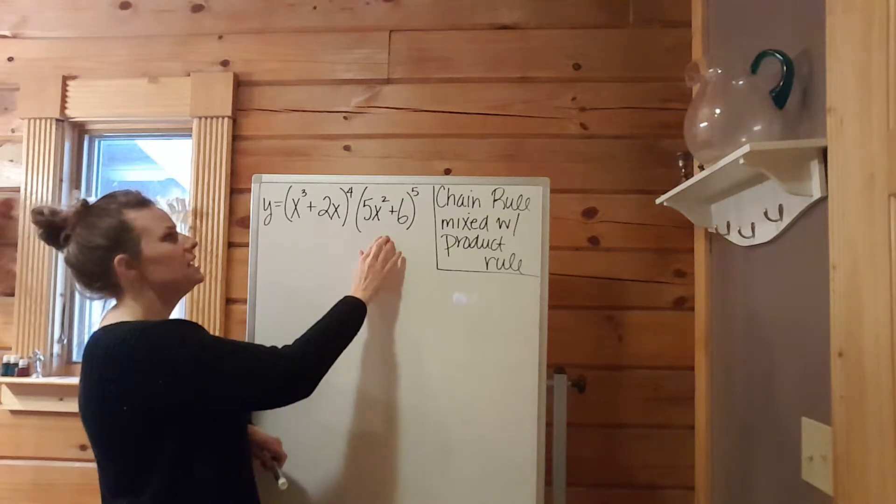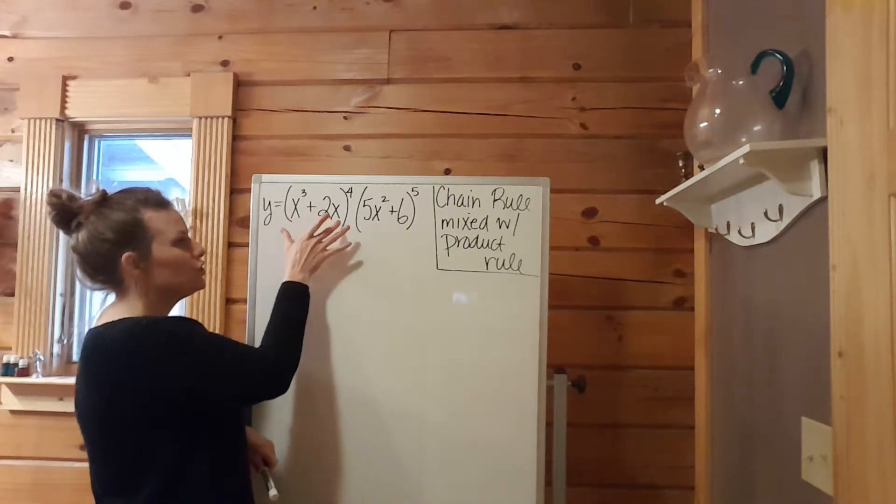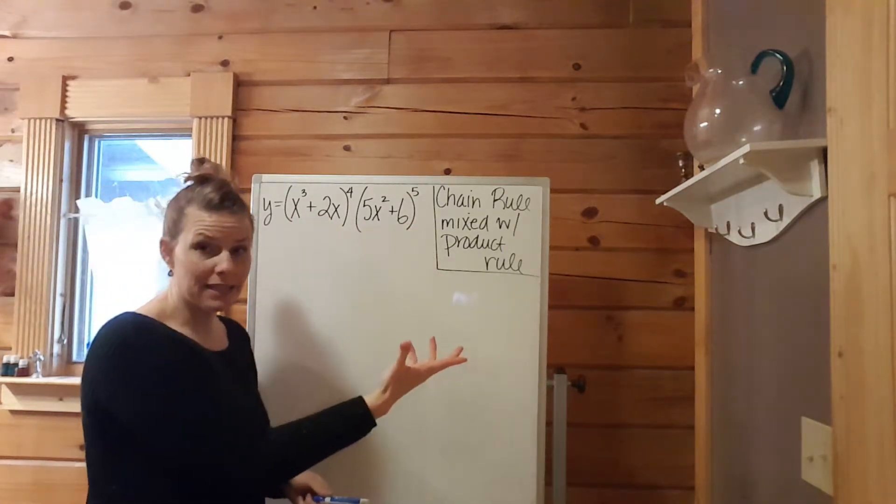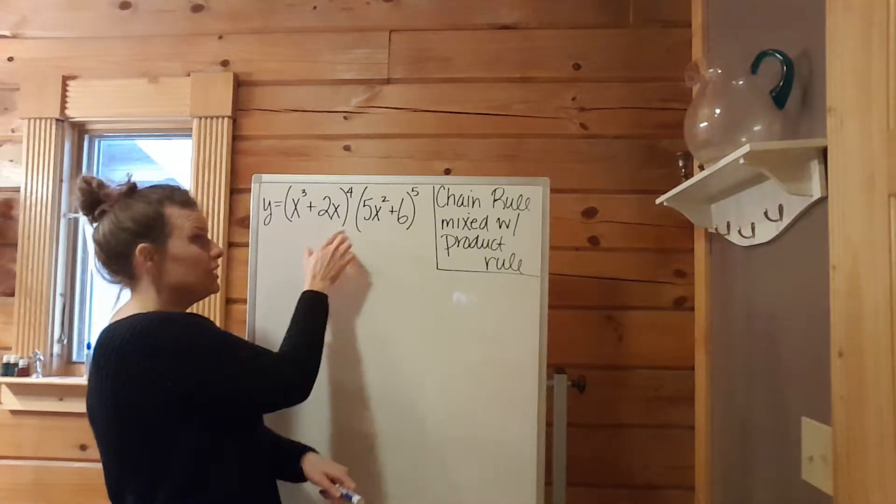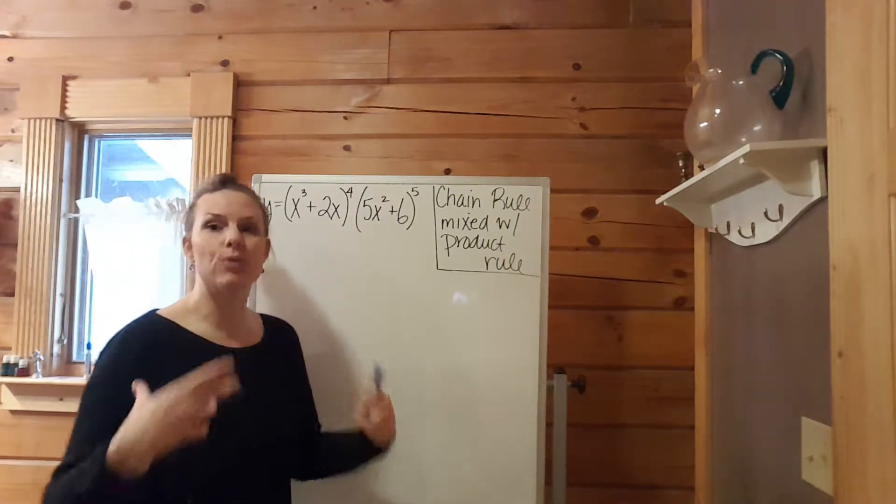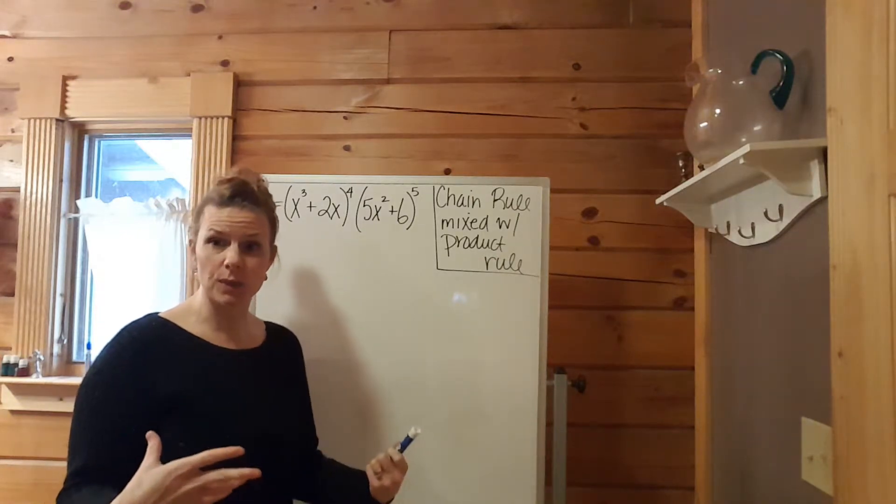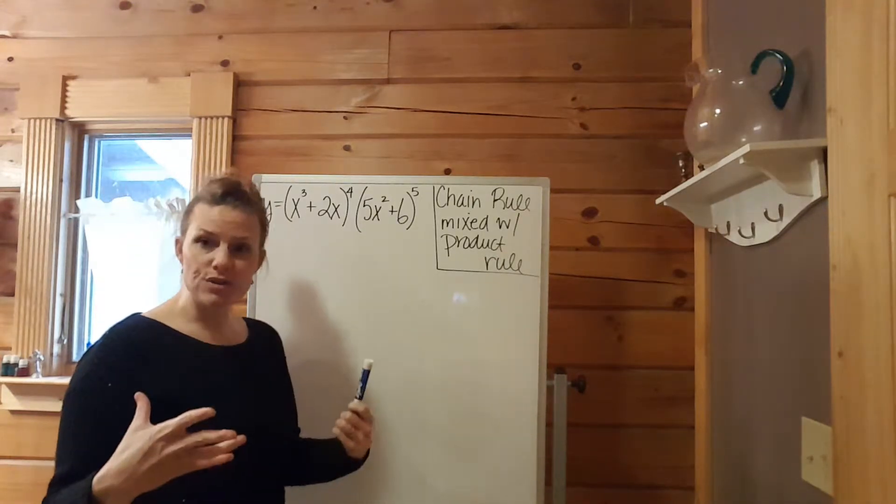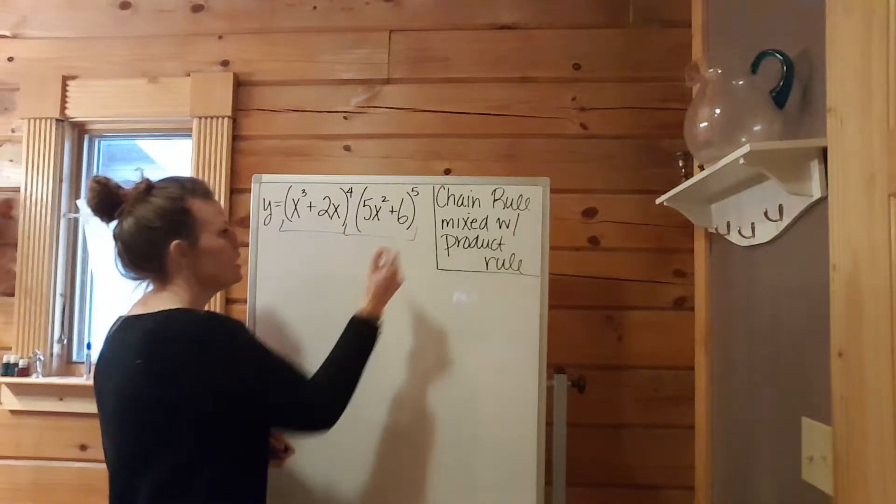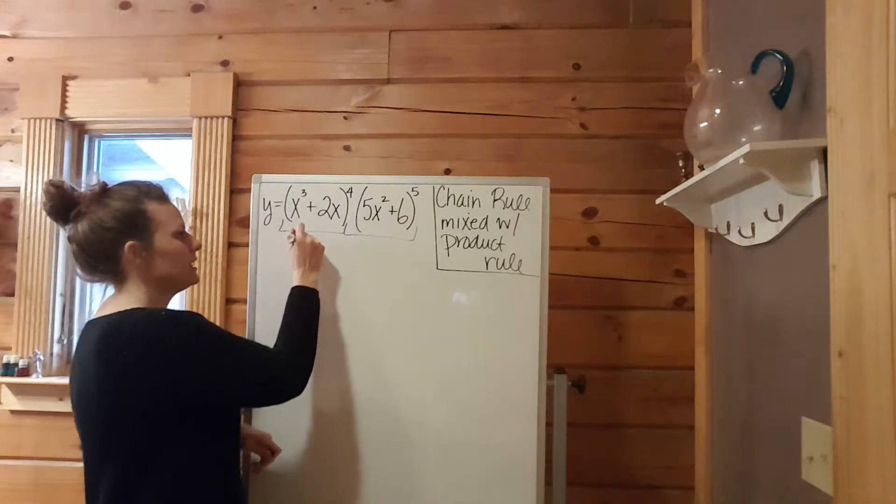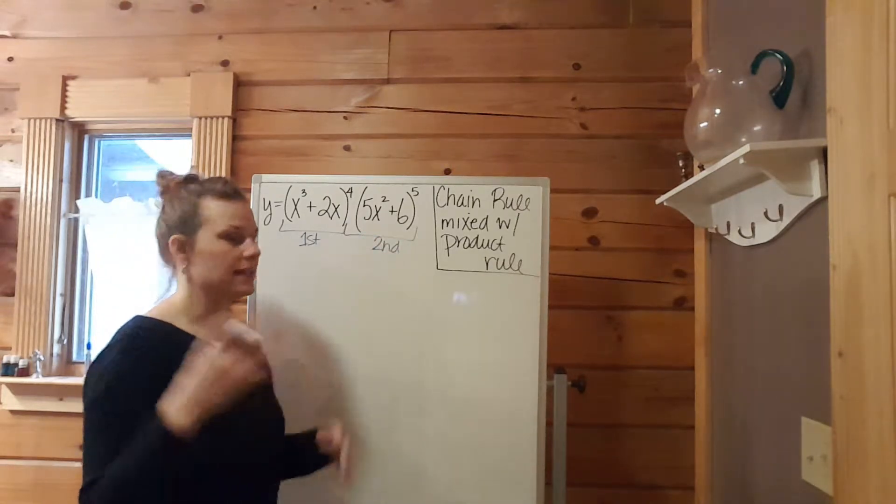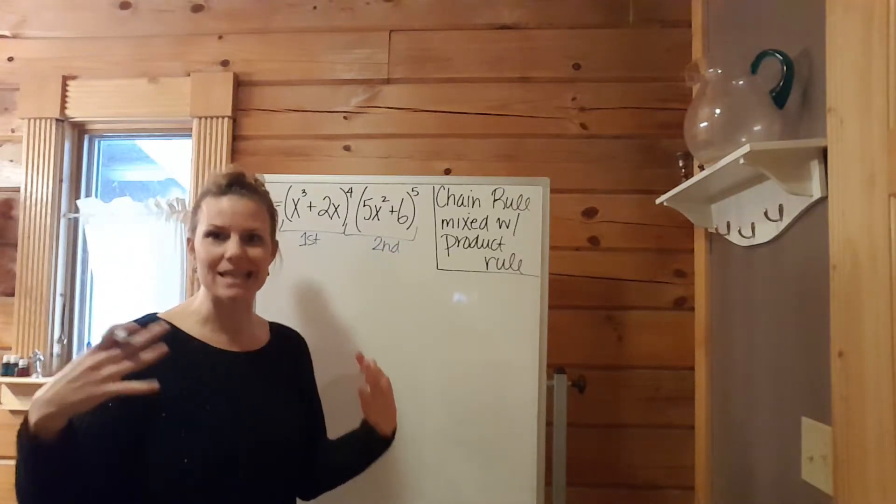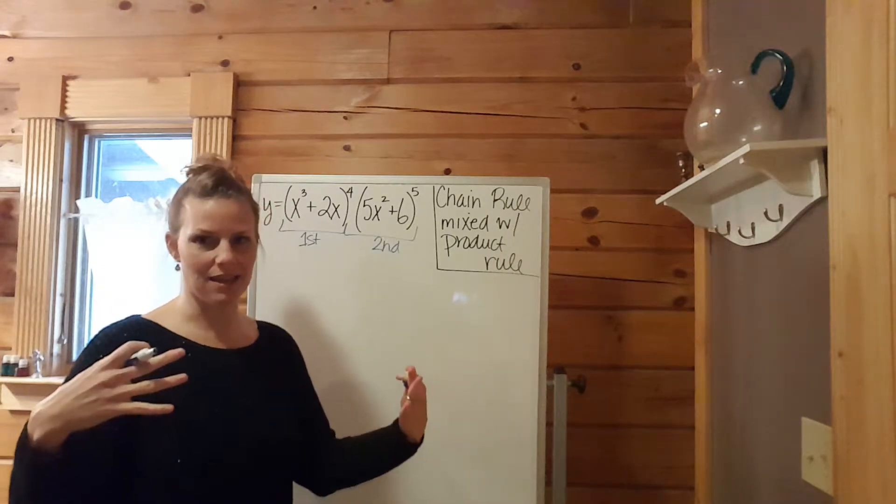This function says we have two things multiplied together. That should be a tip-off that two things multiplied together is a product, so that is a product rule. The way I approach the product rule, I usually divide out the two things - this is the first thing, this is the second thing. That's how the product rule goes in my mind in terms of first thing, second thing.